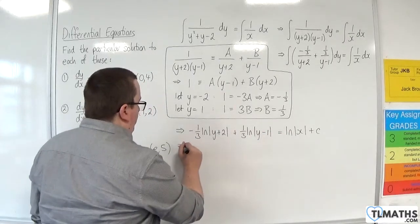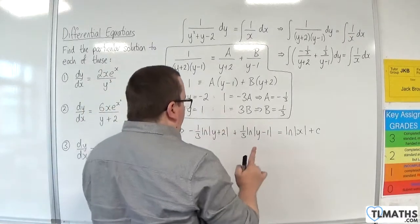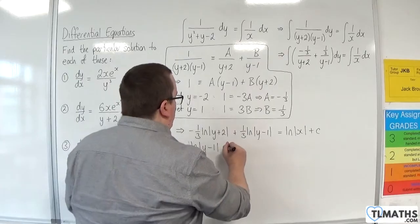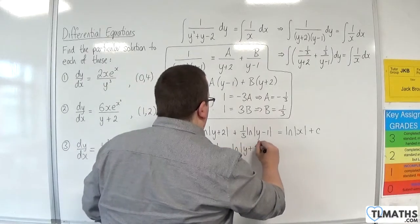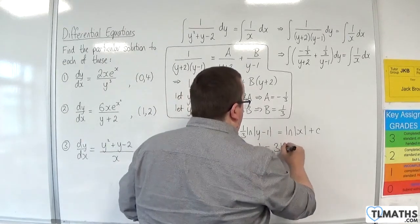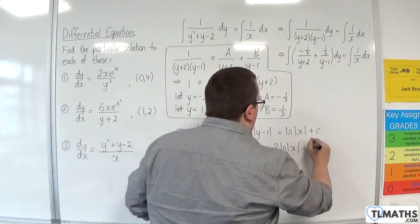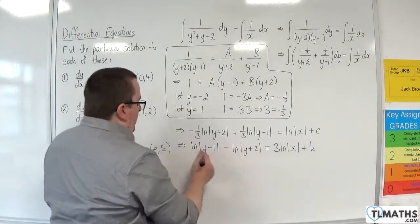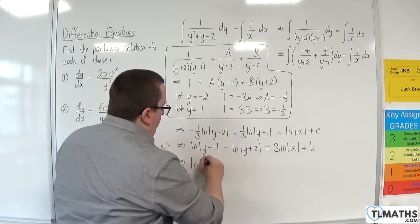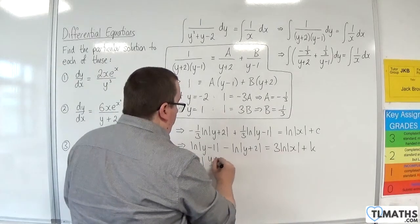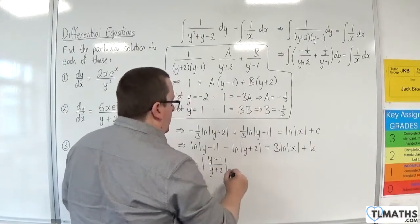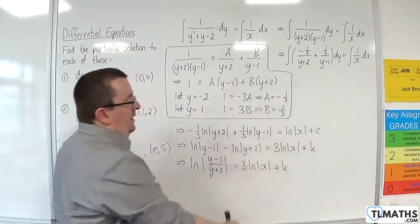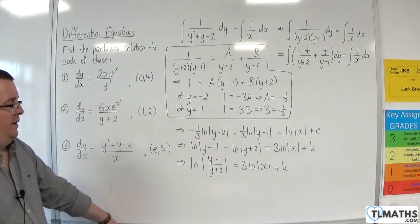I'm going to do a little bit of manipulation first. I'm going to multiply through by 3 and reorder the two terms. So we get the natural log of |y−1| minus the natural log of |y+2| is equal to 3 times the natural log of |x| plus k, where k = 3c. Using log laws, I can write the left-hand side as the natural log of |（y−1)/(y+2)|. I'll leave the right-hand side as is rather than bringing the 3 up as a power.